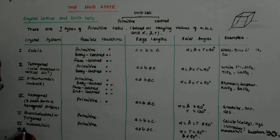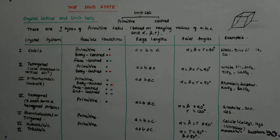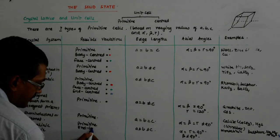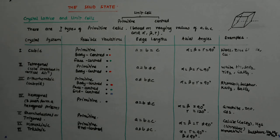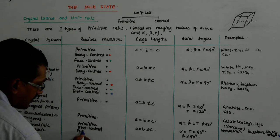Then I come to the last one, which is triclinic. In monoclinic we have primitive as well as end-centered. In triclinic we have simply primitive. All angles — alpha, beta, and gamma — are not equal to each other and none equals 90 degrees.